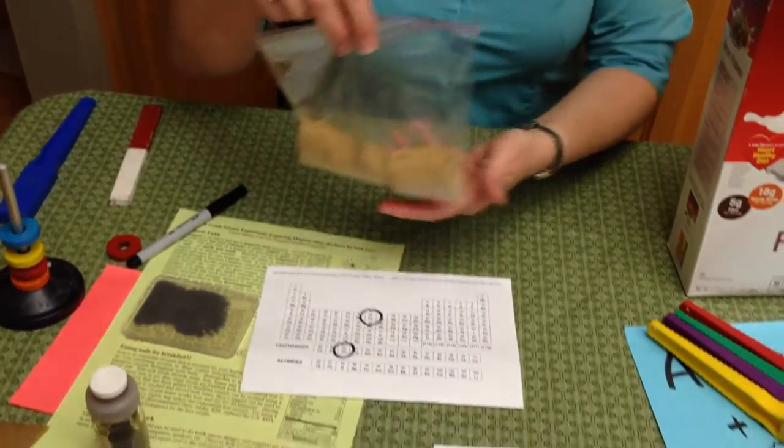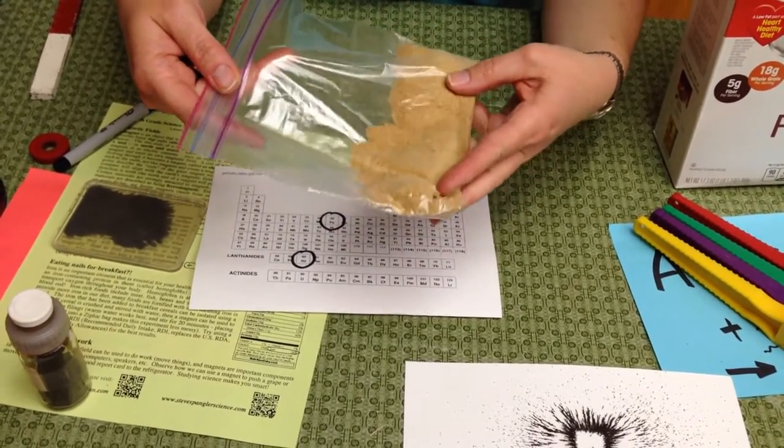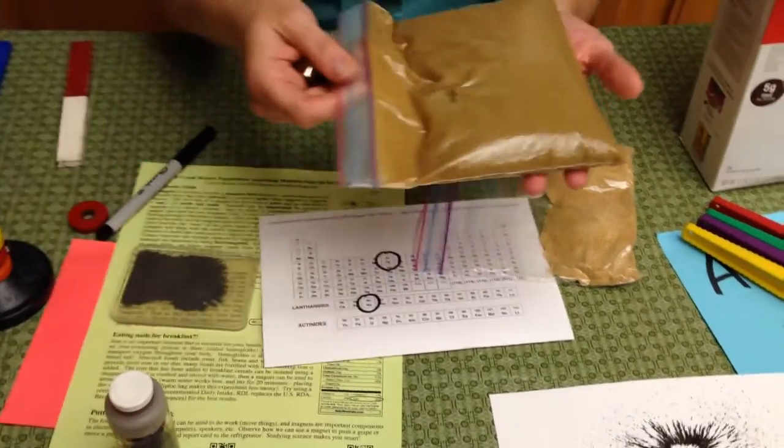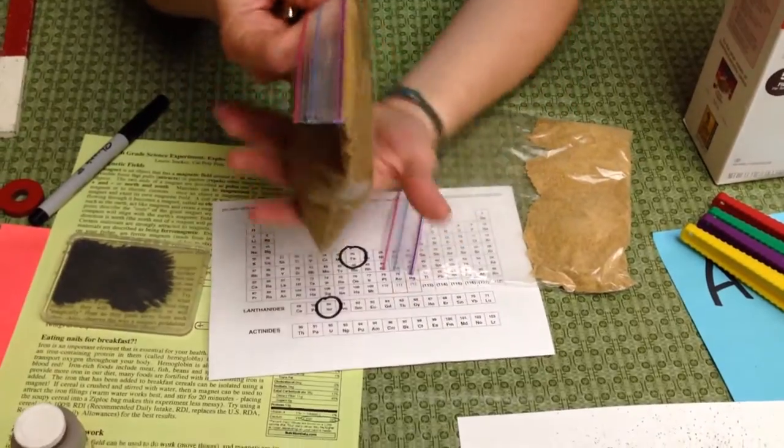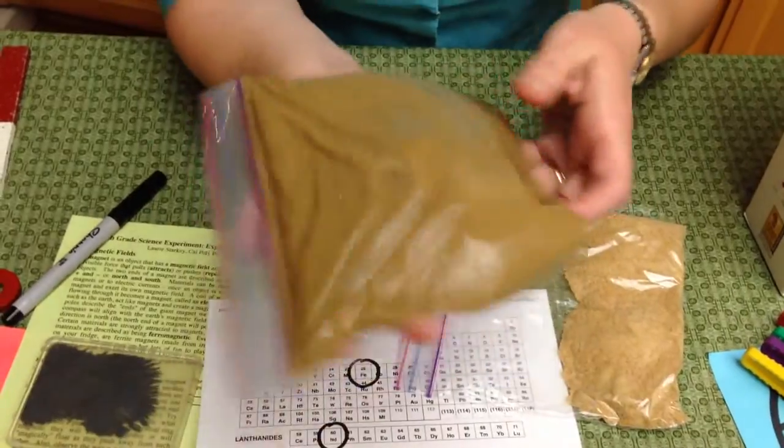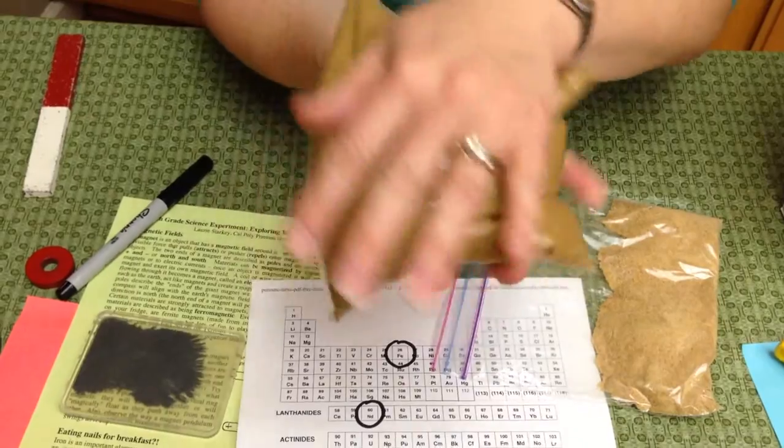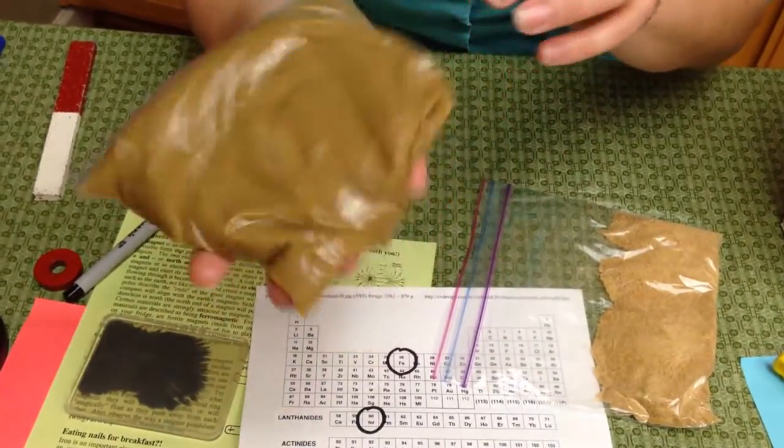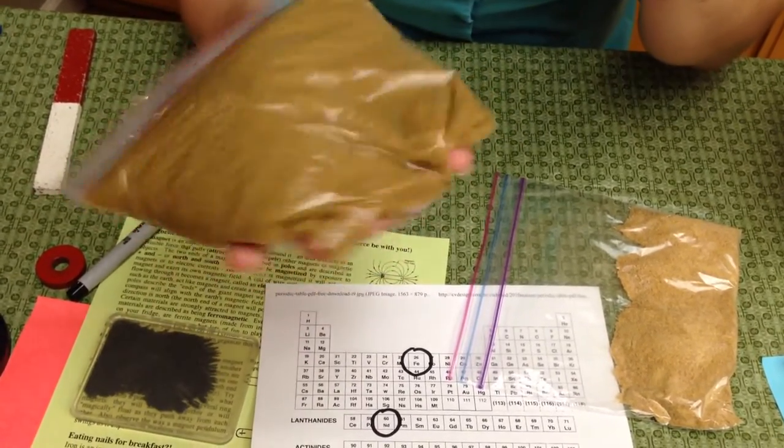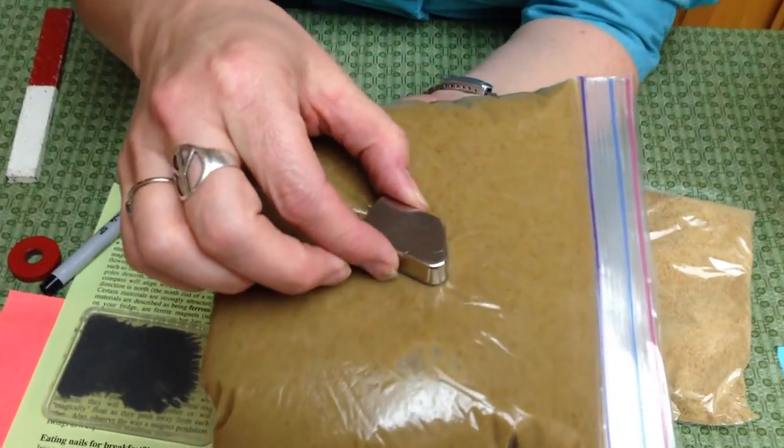What I did was I ground up this cereal using a blender—this is maybe about a little less than a half a cup of cereal that's been powdered. Then I added some warm water to it, maybe about a cup and a half, so it's not too mushy but not too liquidy. If I take my magnet and put it underneath here and swish it around, it's going to take all those iron filings that are inside the cereal and draw them to the magnet. The iron filings are a very tiny amount that's added—we can't taste it, but that's what gives us iron in our diet. Iron is really important in our diet.